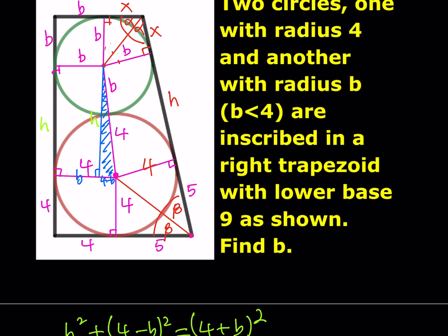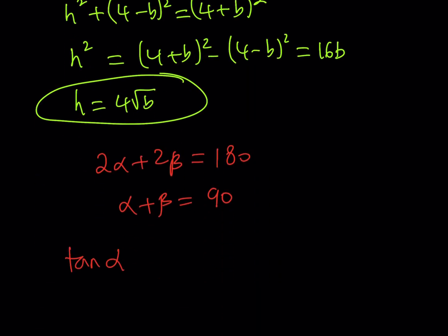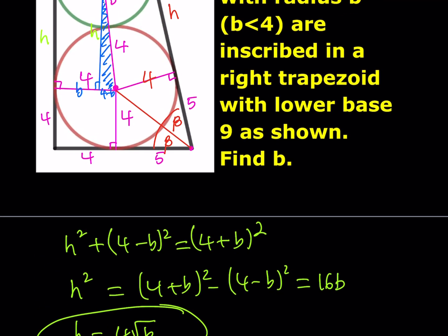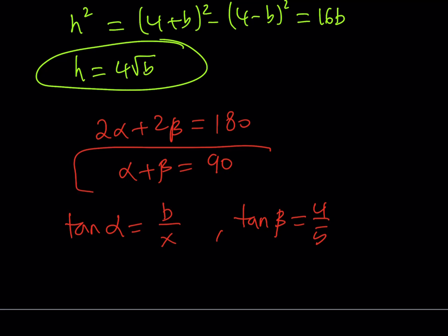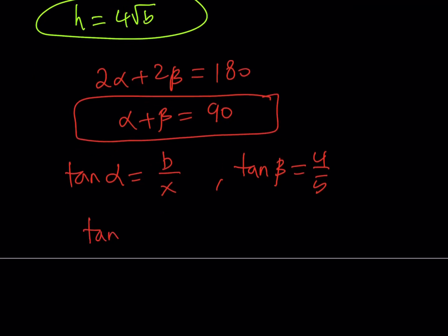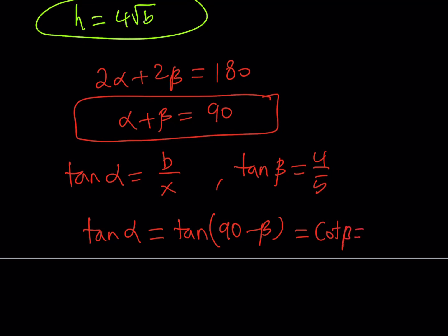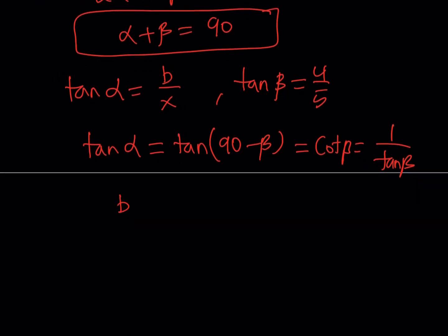To relate alpha and beta, we use trigonometry. Tangent alpha equals b over x. Tangent beta equals 4 over 5. Since α + β = 90°, alpha and beta are complementary, which means tan α = tan(90° − β) = cot β = 1/tan β. In other words, the tangents are reciprocals of each other, so b/x = 5/4.